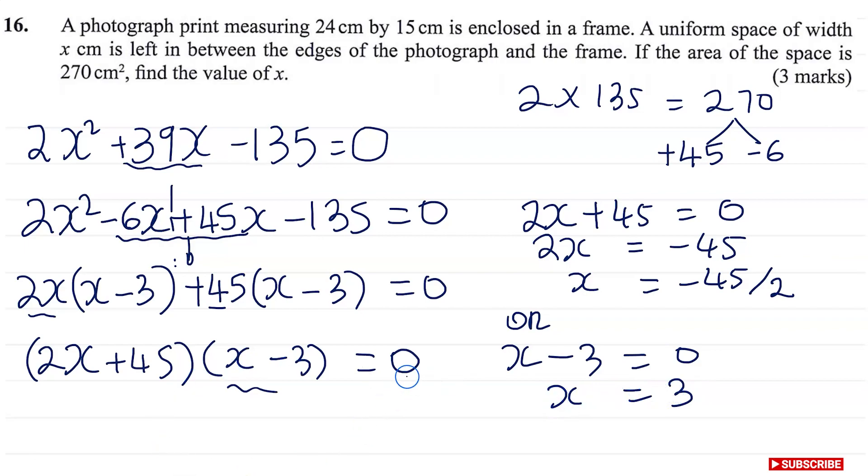Now, what do you need to choose here? Well, I've got the first value as a negative number. Now, remember, we are talking about the width. The width cannot be negative. So your final answer which you're going to conclude is x is equal to 3cm.